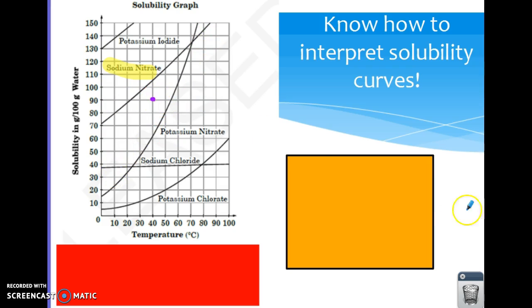If you were talking about this same dot, and instead you were talking about potassium nitrate, now the dot is above the line, so that would be supersaturated.